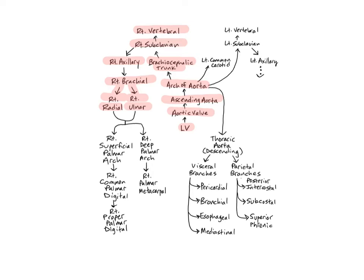The right ulnar artery is the larger branch of the brachial artery, traveling along the medial side of the forearm — the ulna side — and then into the wrist. Like the brachial artery, the ulnar branches into superficial and deep branches that enter the hand and then unite with branches of the radial artery to form the palmar arches of the hand. The ulnar supplies the muscles of the anterior compartment of the forearm.